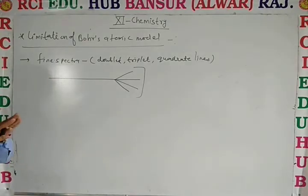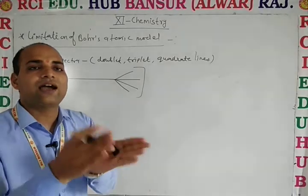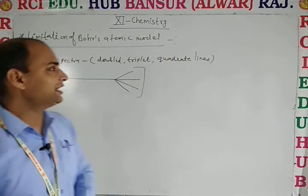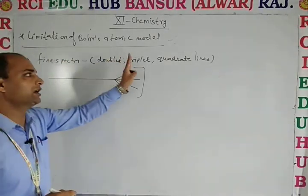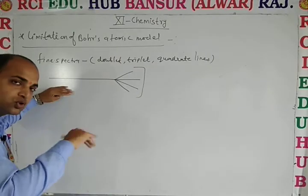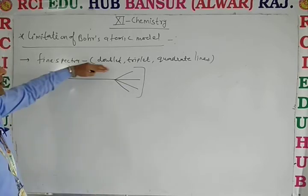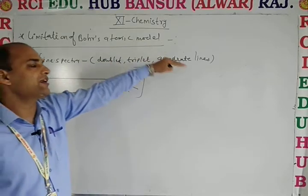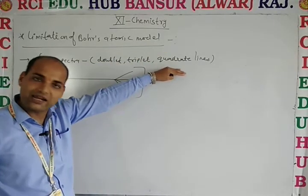So, Bohr's atomic model does not explain the fine detail of the spectrum. That is, doublet line, triplet line and quadruplet lines. Single lines also divide in further, two lines, three lines and quadruplet lines. Right?